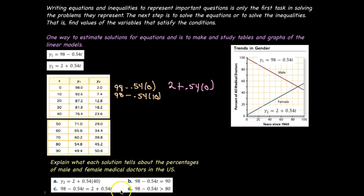Now let's consider these symbolic representations below A through D and explain what each solution will tell us about the percentages of male and female doctors in the U.S. Let's look at A2: Y2 equals 2 plus 0.54 times 40. Where is that in my table? 40 represents T, and that is right here at 40. So I want to know what Y2 is, and Y2 is 23.6. That's saying 40 years after 1960, the percent of female doctors will be at 23.6%.